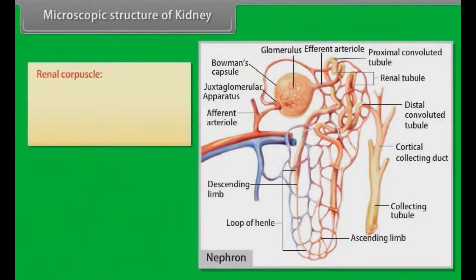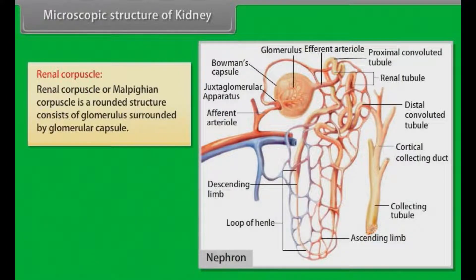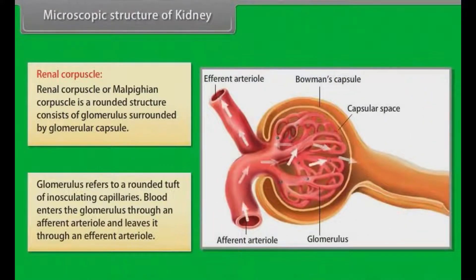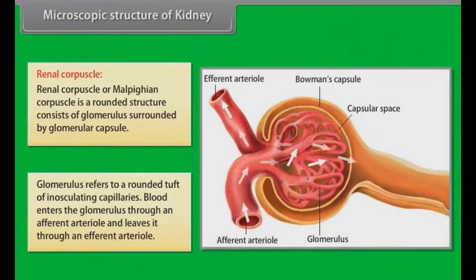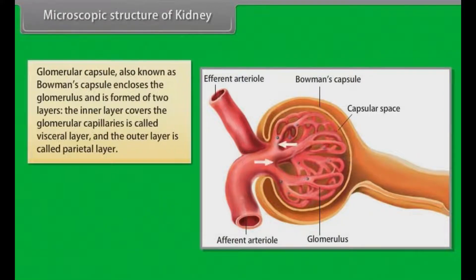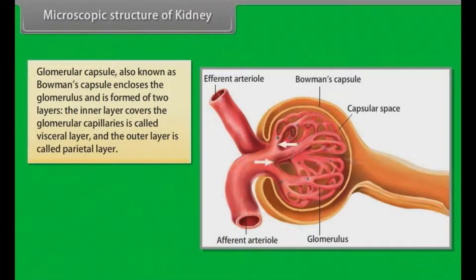The renal corpuscle, also called the Malpighian corpuscle, is a rounded structure consisting of a glomerulus surrounded by a glomerular capsule. The glomerulus refers to a rounded tuft of anastomosing capillaries. Blood enters the glomerulus through an afferent arteriole and leaves through an efferent arteriole. The glomerular capsule, also known as Bowman's capsule, encloses the glomerulus and is formed of two layers: the inner visceral layer covering the glomerular capillaries, and the outer parietal layer.